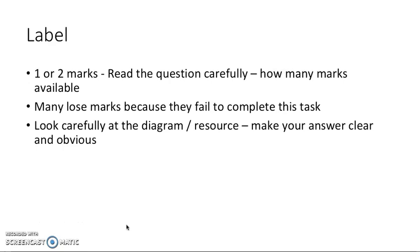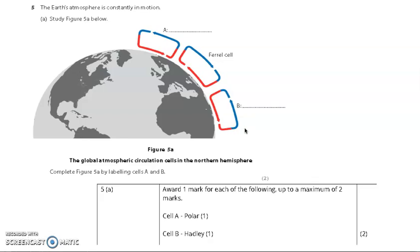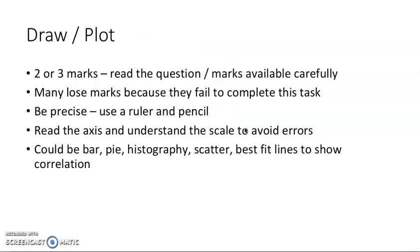Now label again, very, very simple, but read the question carefully. How many labels do you need to give? Many people lose marks because they don't read the question and they see the diagram and don't realize they've got to mark things on there. So, for example, many people would see this and then just think it's a resource and don't bother reading the question. Here it's worth two marks. So you've got to label these key things. So just have a go. What do you think those different cells are called? And the answer is there. A is the polar. B is the Hadley.